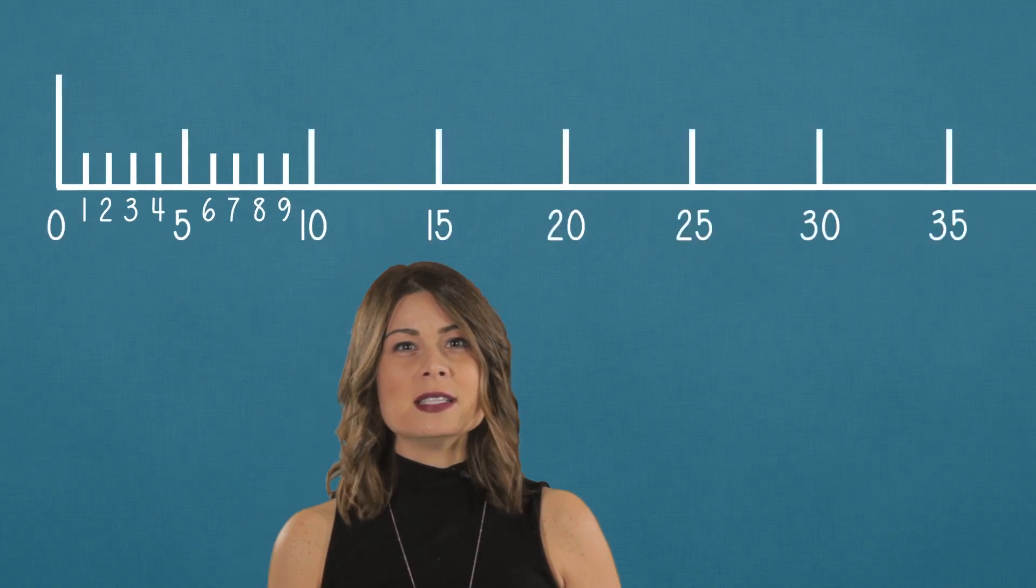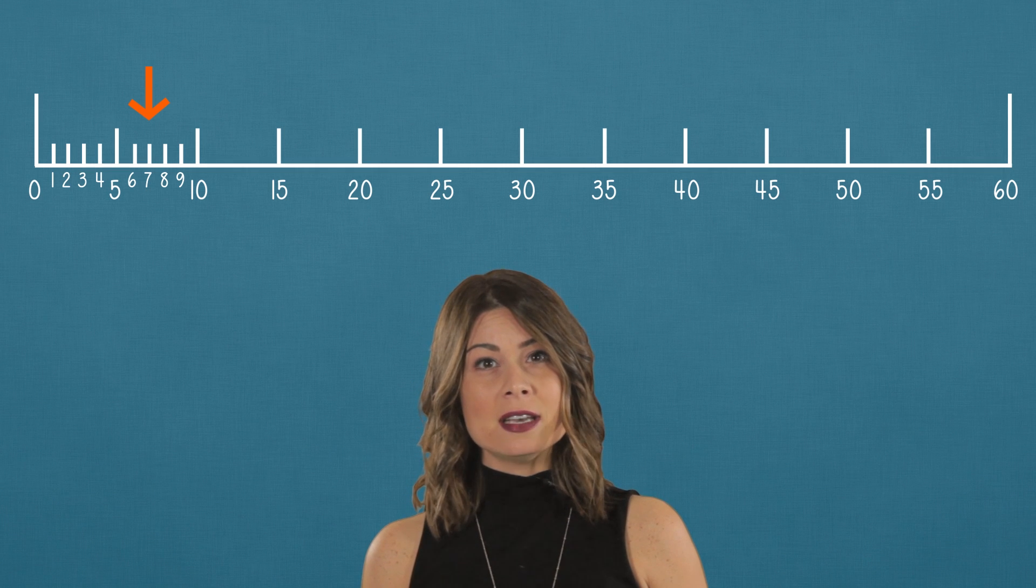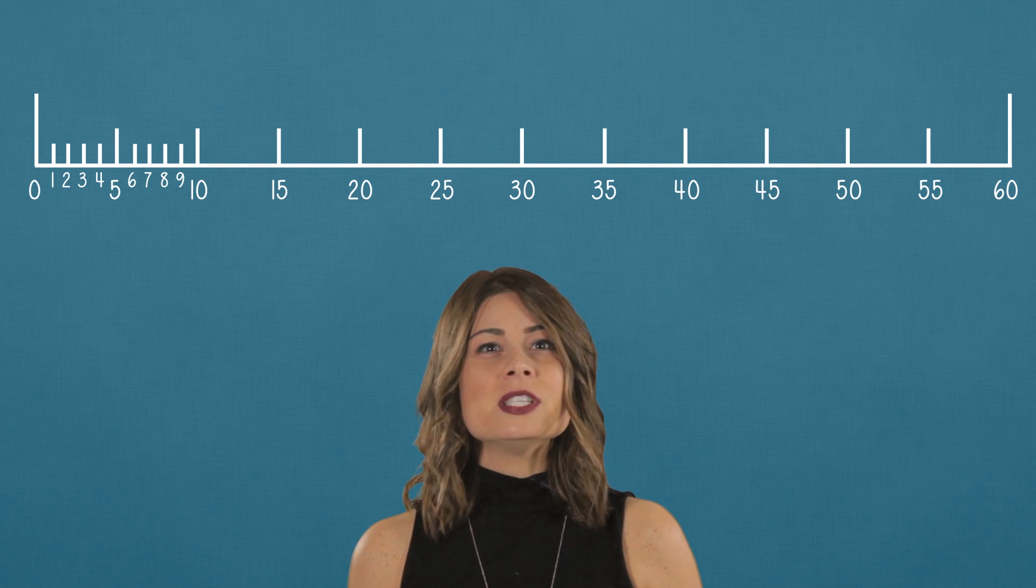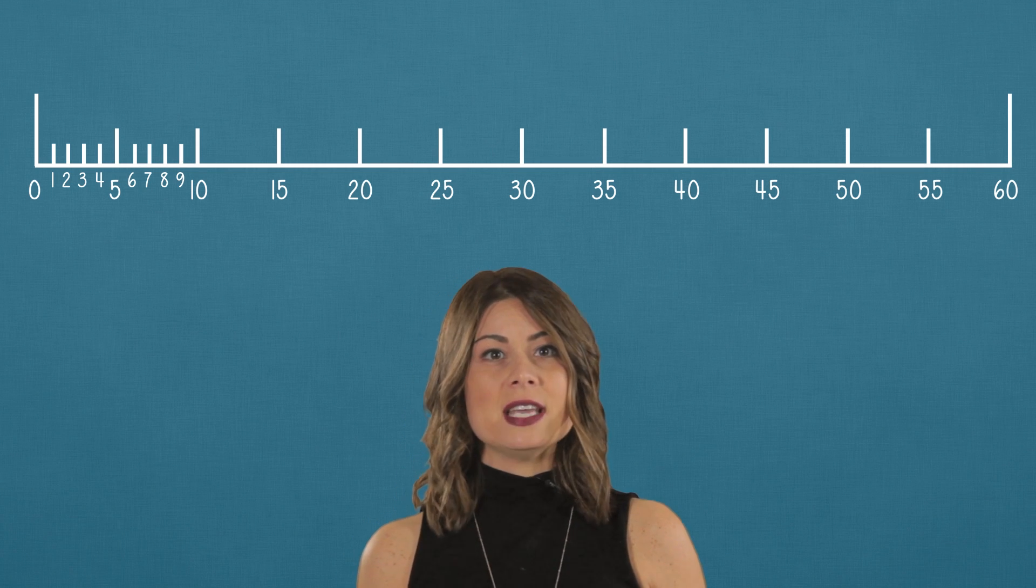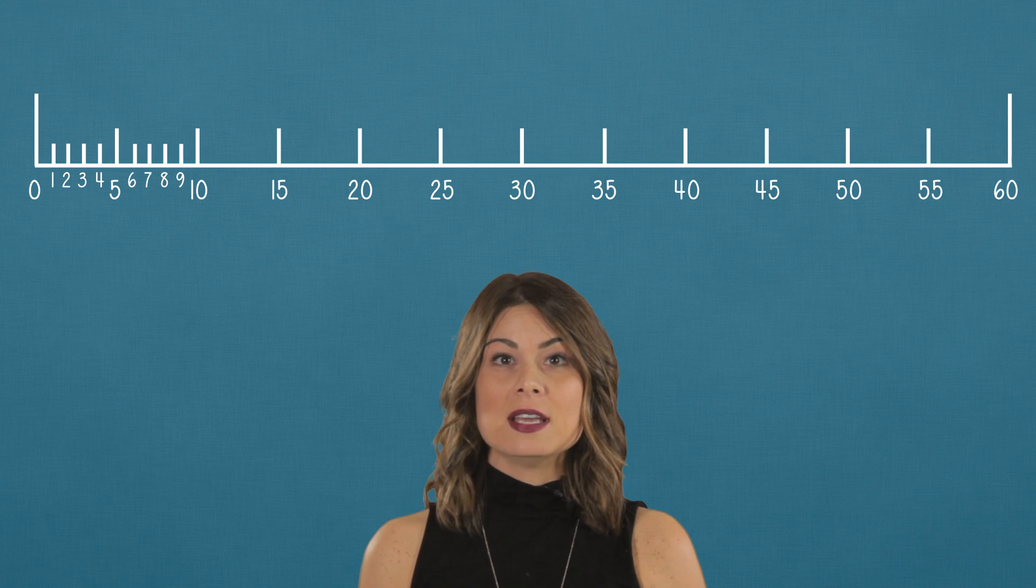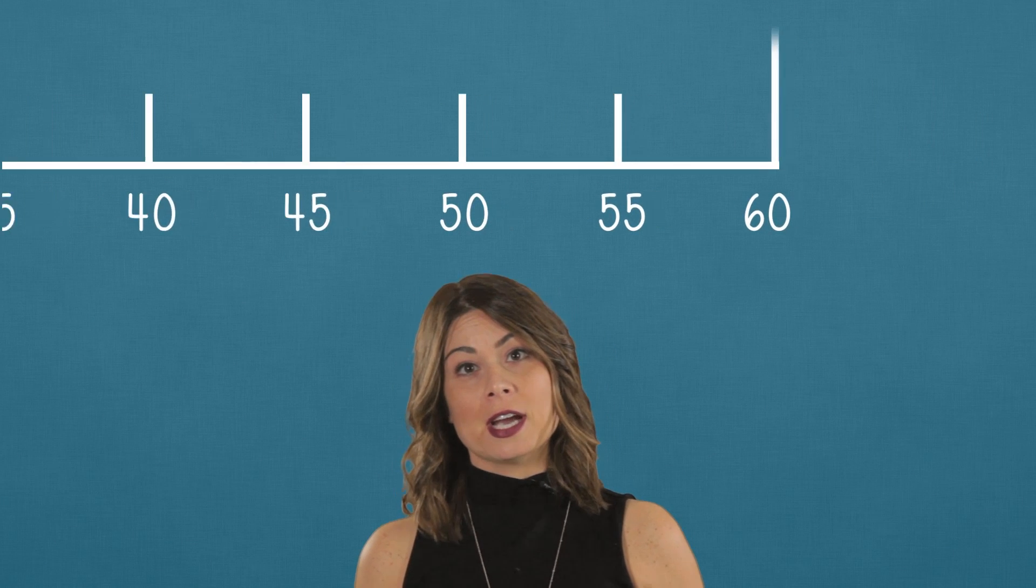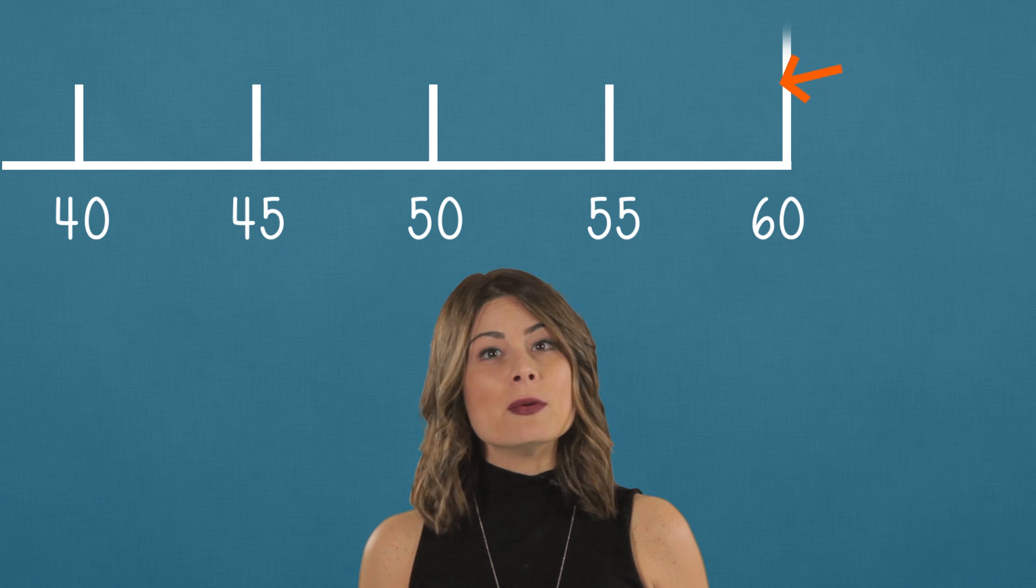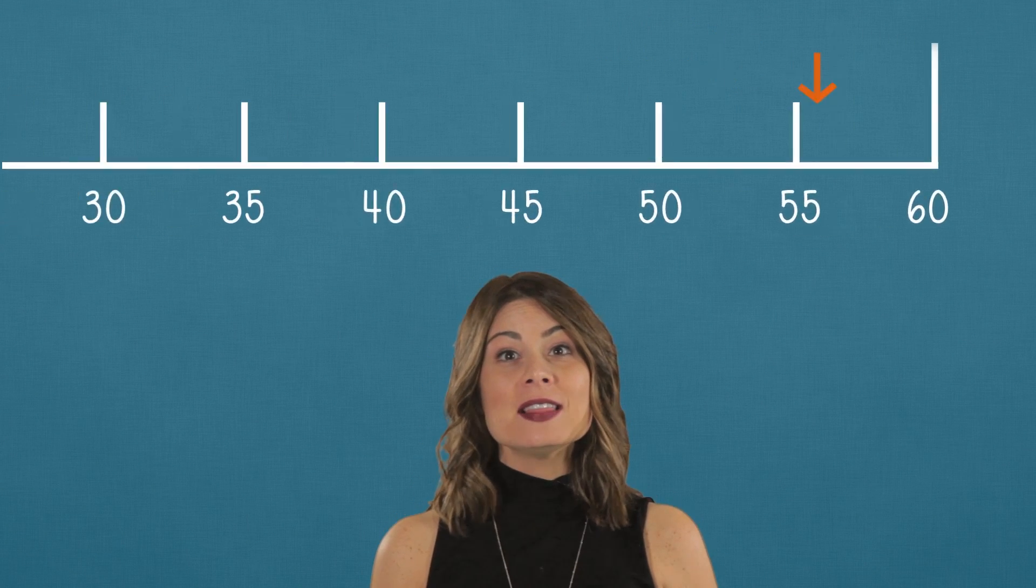Now what if we wanted to count to 58? Just like how 7 was here between 5 and 10, 58 will also be found between two numbers on our number line. But which ones? Between which two numbers will we find 58? Let's see, 58 is going to be way over here. It's greater than 55 and less than 60. So it will be somewhere in here.